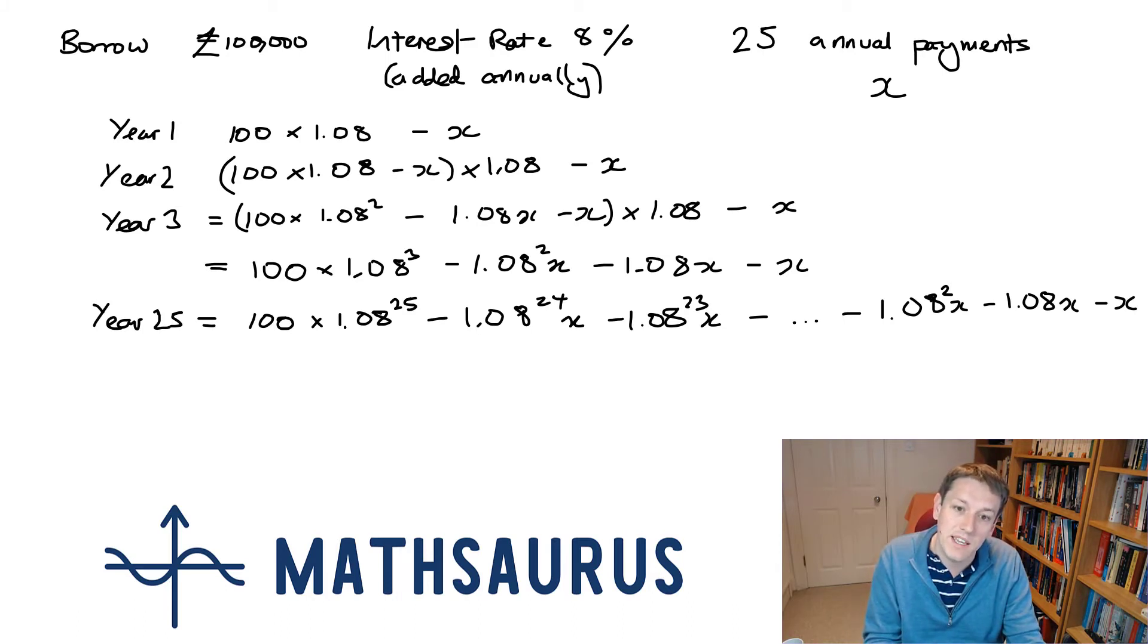The very first payment I made of x at the end of year one has had 24 years of interest or inflation applied to it. So if I hadn't made that payment 24 years ago, I would owe an extra 1.08 to the 24 times x.